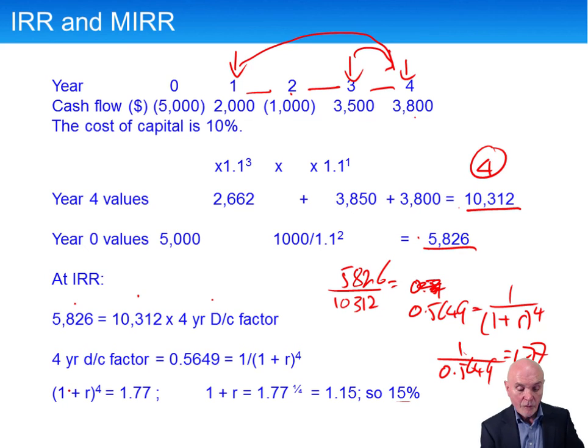So here we have 1 plus R to the fourth is 1.77. We take the quarter root of both sides, the fourth root. So that will simply come to 1 plus R. And we need 1.77 to the quarter or to the, you know, take the square root, then take the square root, which is what you're going to be getting to. And we're left with 1 plus R equals 1.15. Therefore, R equals 0.15 or 15%.